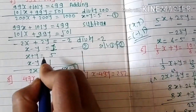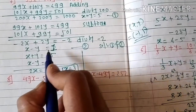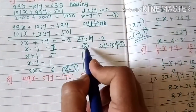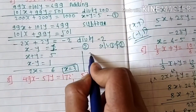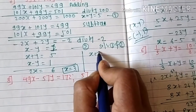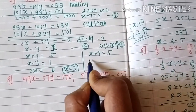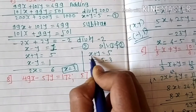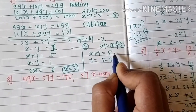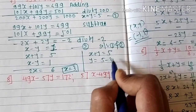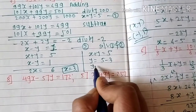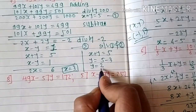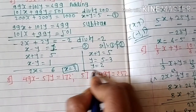Substitute x equals 3 into equation one: x plus y equals 5 gives y equals 5 minus 3, so y equals 2. The solution is x equals 3 and y equals 2.